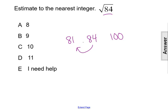So now, if we think of the square root of 84, it's going to be much closer to the square root of 81 than it is the square root of 100.